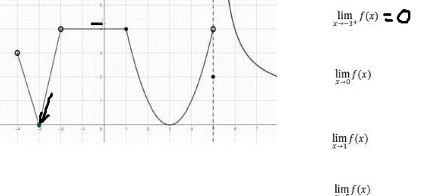We can see that on the left they go this way and on the right they go this way, and we see that this is about number four. The limit on the left and the limit on the right both give number four, so the value of this limit equals number four.